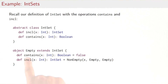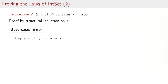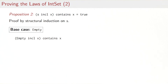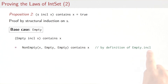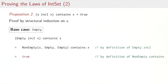The second proposition says that if we include X in S and then ask whether the set contains X, we get true. We can prove this by structural induction on the set S. The base case is where S is empty. Empty.include(X) gives us a non-empty set with X at the root and two empty subsets. Asking whether that contains X returns true, because of the clause of contains in a non-empty set where asking for the element at the root gives back true. You can compare to the implementation of non-empty to verify that.